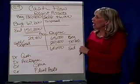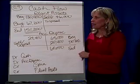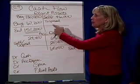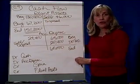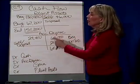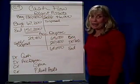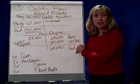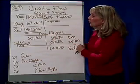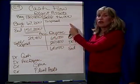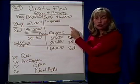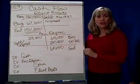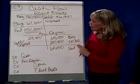In exercise nine, we're given the following information. Our plant assets had a beginning balance of $130,000, and was increased because we bought some more plant assets — buildings, equipment, etc. — for $67,200. We also disposed of something that had an original cost of $46,000, which gave us our ending balance.